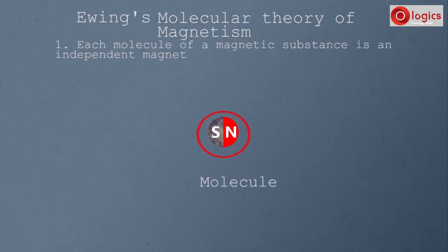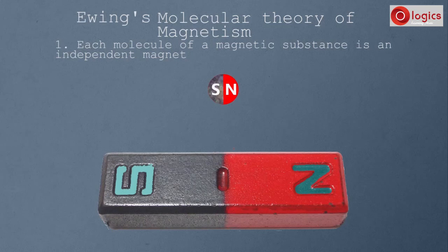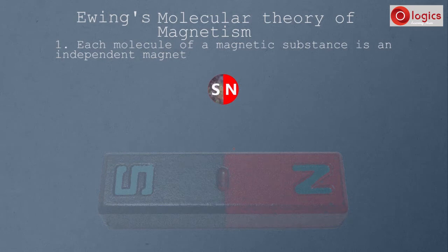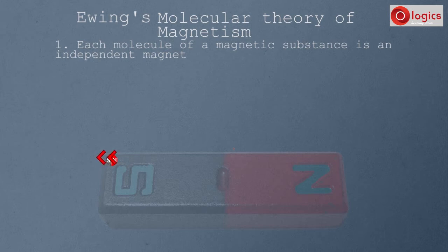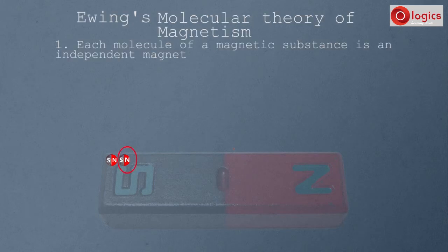This tiny molecule acts like a magnet, and a bar magnet is made up of these molecules. Let's observe how these molecules are arranged inside a bar magnet. The south pole of one molecule is towards the north pole of another molecule — an attraction force exists between them. Similarly, the north pole of that molecule faces the south pole of the next one.